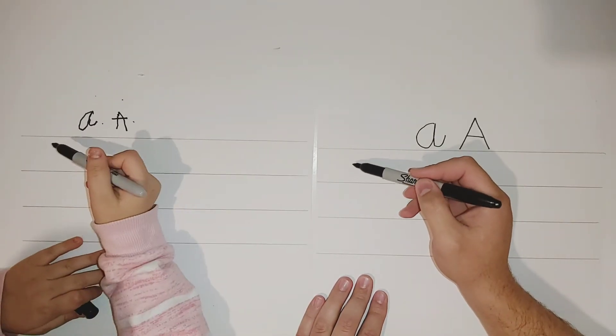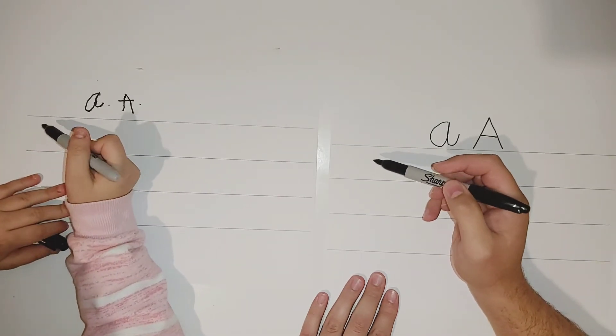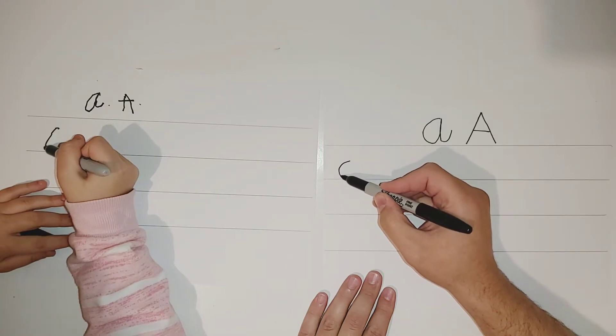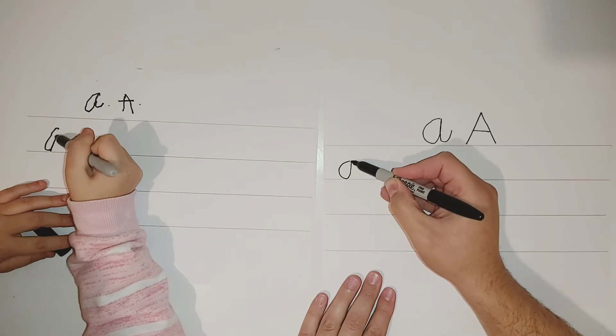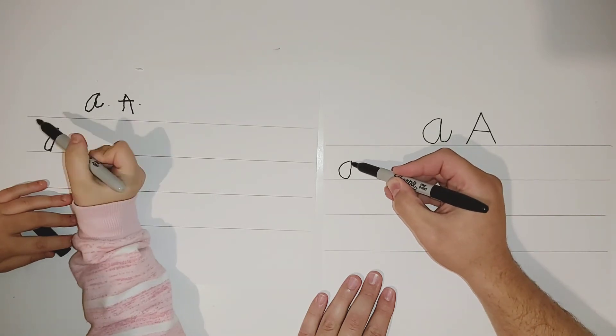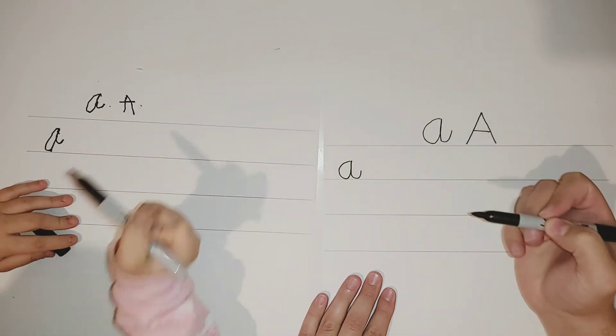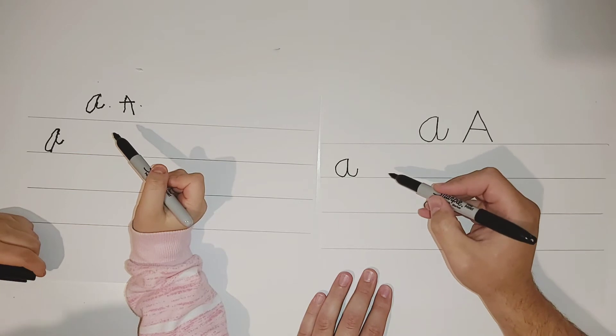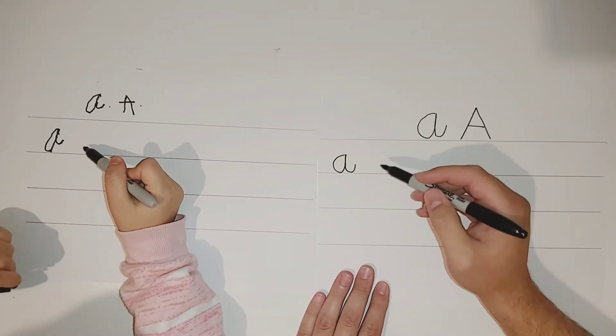We'll start about in the middle between these two lines. Make a big curve to the left, finish on the bottom, back up where you started, back down to the line and another curve like this. This is lowercase a. So we'll carry on to the end.